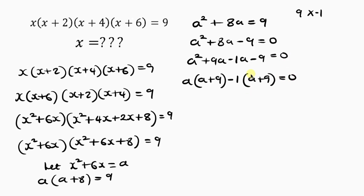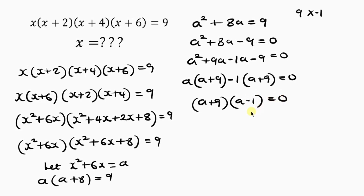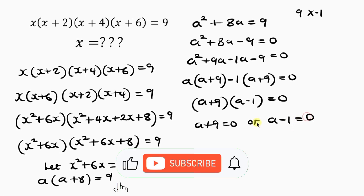We can write the factors as (a+9)(a−1) = 0. So either a+9 = 0 or a−1 = 0.